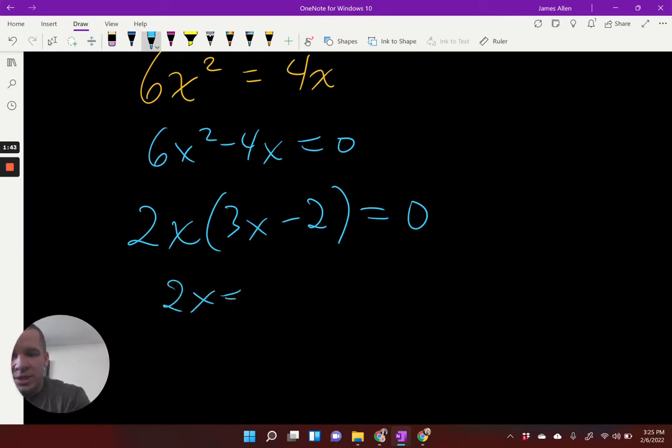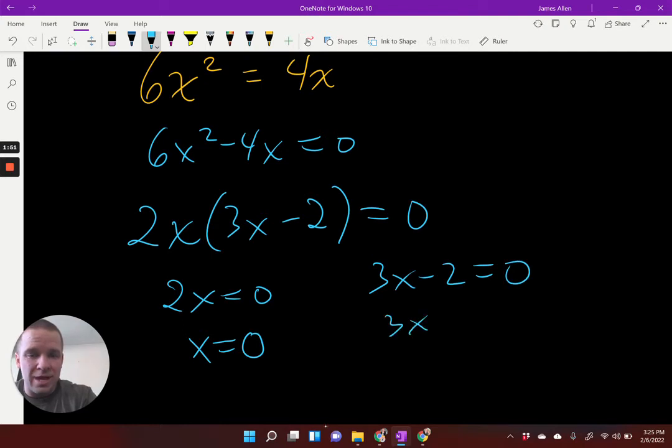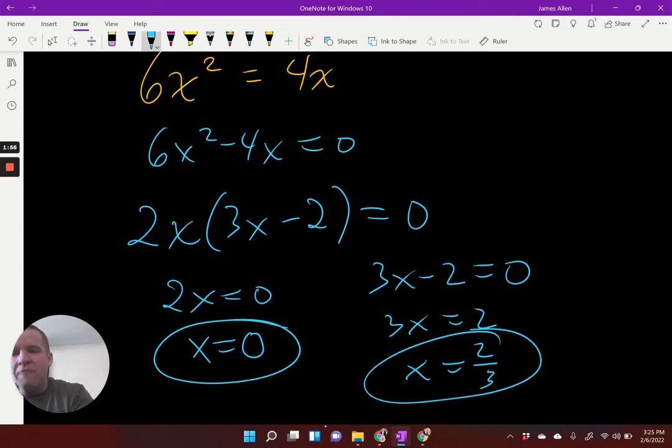All right, so I'm going to take that 2x just like we did before, set it equal to zero, and I will get x equals zero. Now the other one, the 3x minus 2, oh boy, I'm going to have to add 2. That's 3x equals 2. Divide by 3 and I get 2/3. Fractions, ah! It's okay. You guys can handle fractions. Right, Jenny? You can handle fractions. Falling asleep in class.